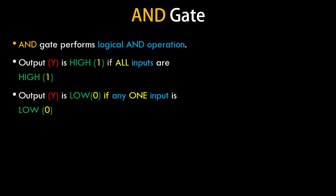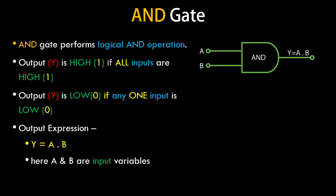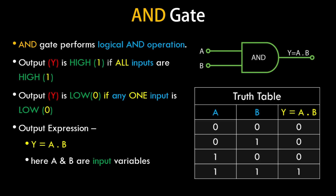The expression is: output Y is given by A AND B. The logical circuit symbol shows two inputs A and B with a single output Y equal to A AND B. Here's the truth table for the AND gate: the output Y is 1 only when both A and B are 1; in all other cases the value is 0.